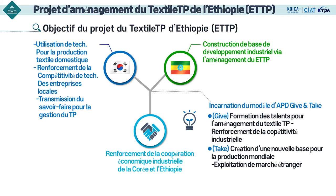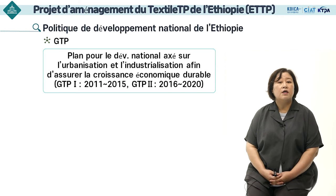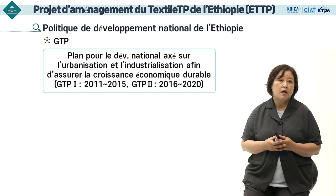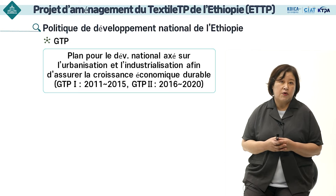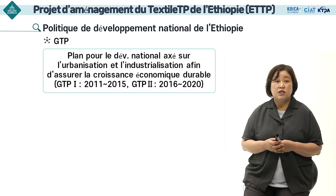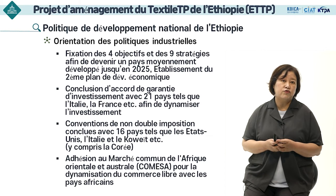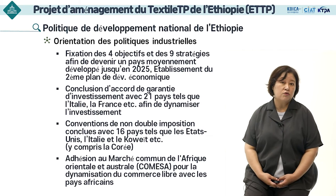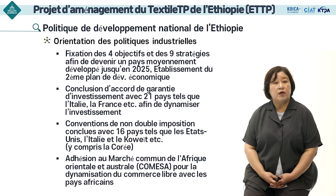Cela aura pour effet d'essayer de parvenir à une coopération industrielle et économique durable entre la Corée et l'Éthiopie. Le gouvernement planifie le plan GTP qui a pour but le développement et le changement national en mettant l'accent sur l'urbanisation et l'industrialisation afin de jeter les bases d'une croissance économique durable. Le gouvernement éthiopien a fixé quatre objectifs afin de devenir un pays à revenus intermédiaires d'ici 2025 et a défini neuf stratégies.